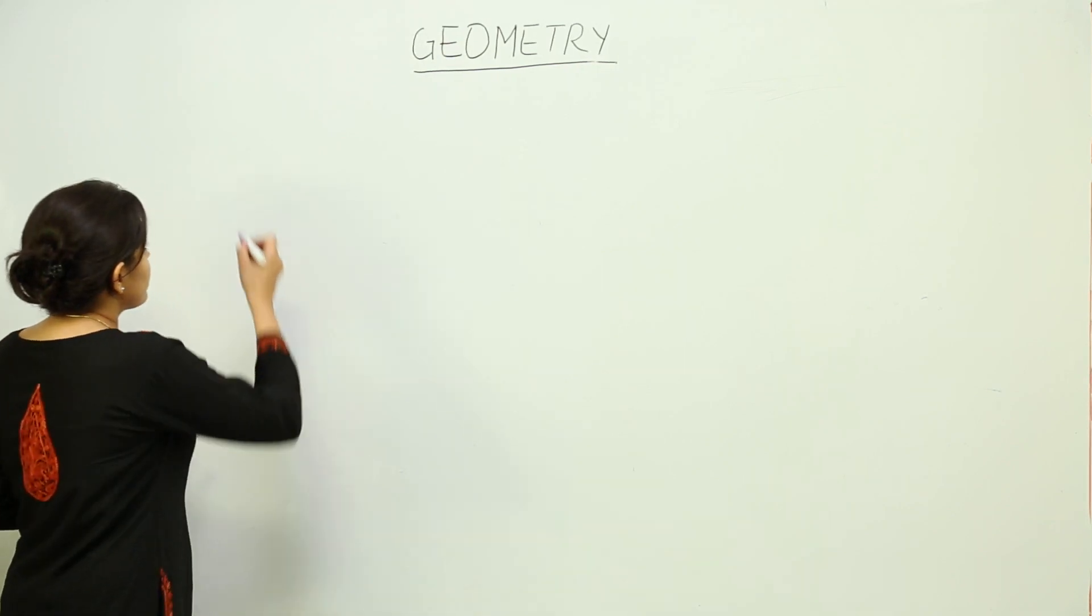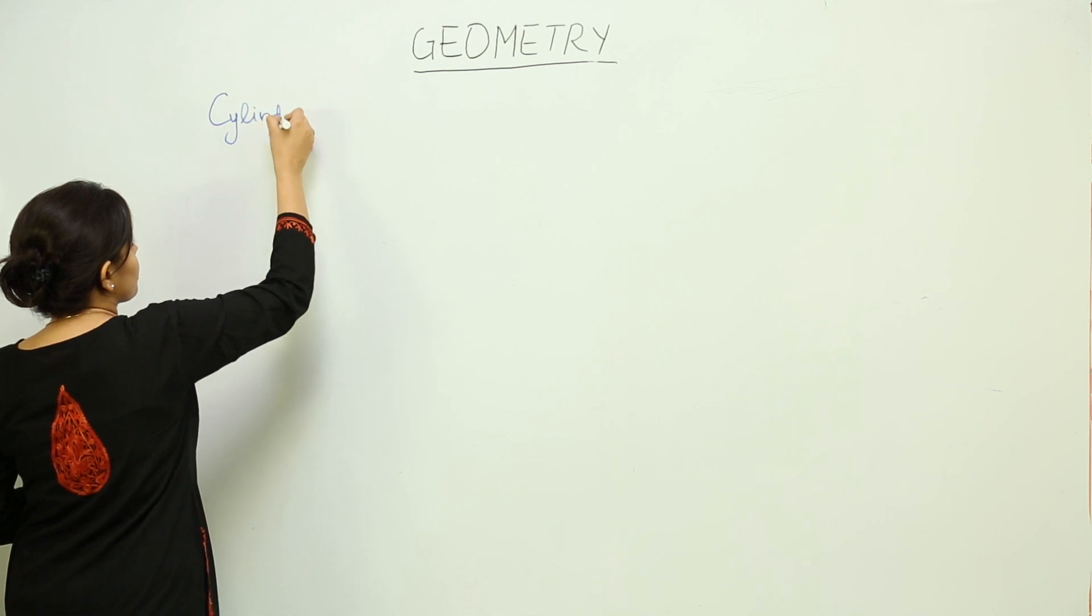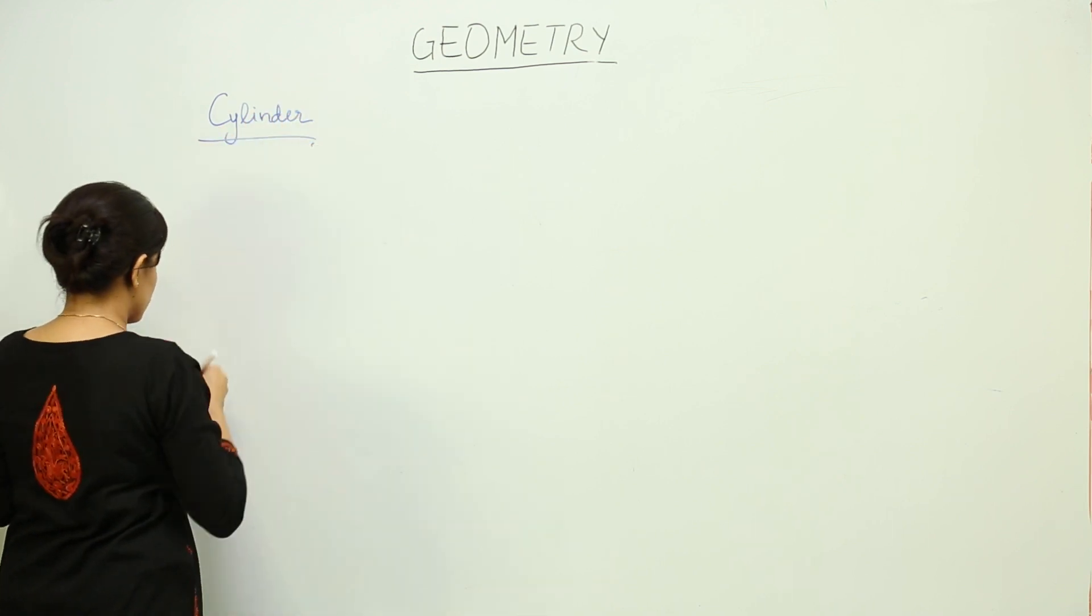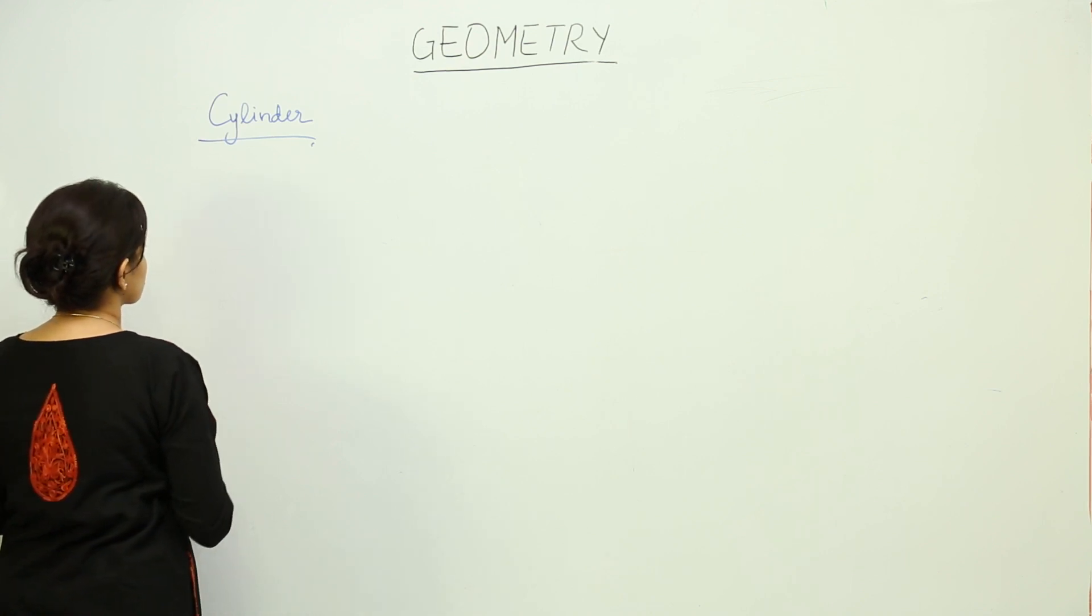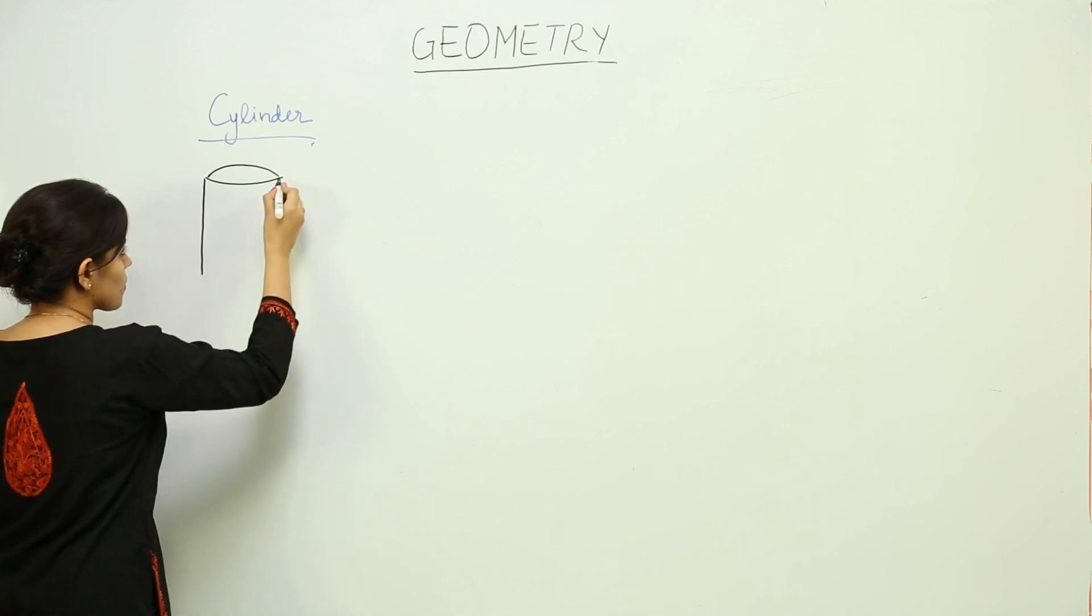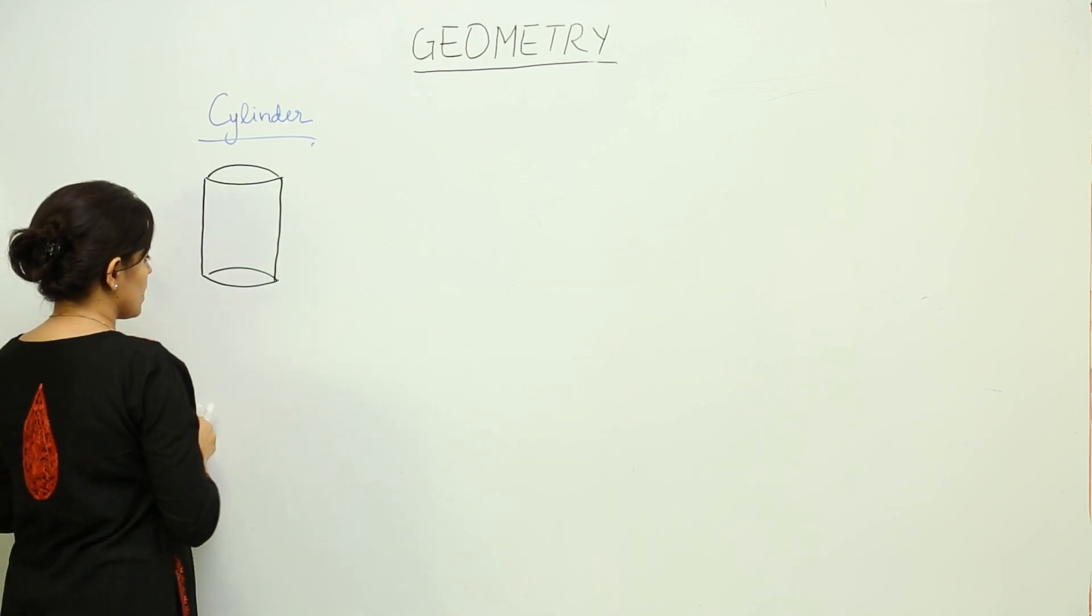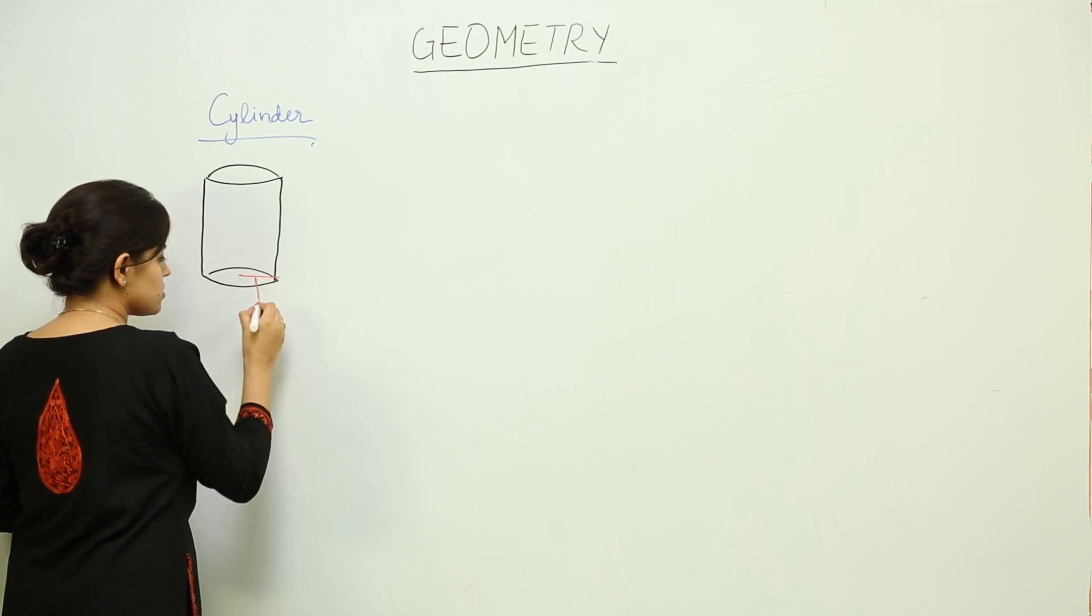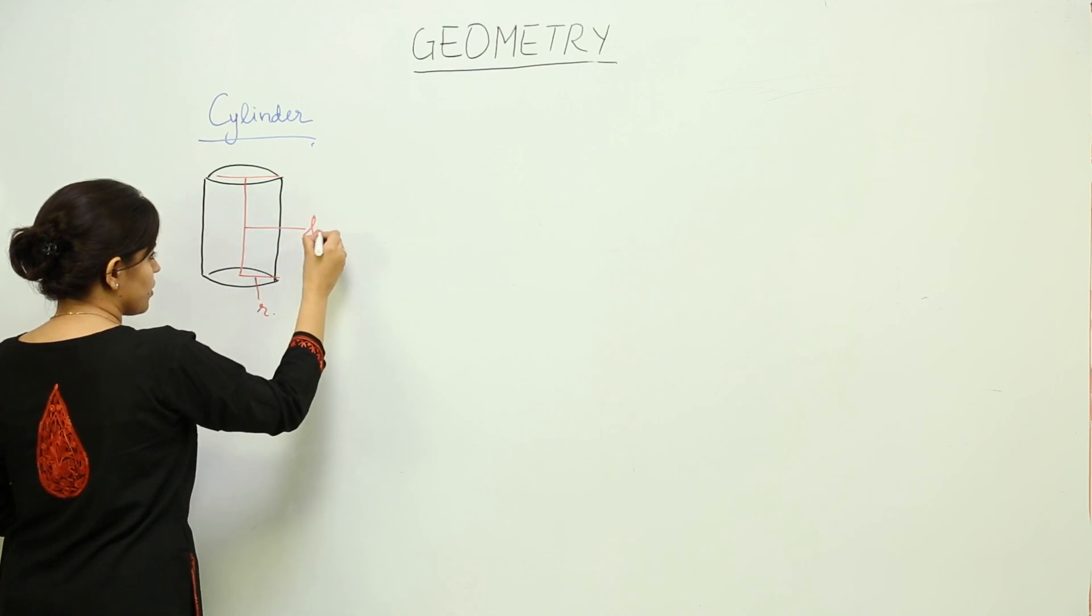The next 3D figure that we have is a cylinder. Let's draw a cylinder first. If this is a cylinder, this will be the radius, this will be the height of the cylinder.